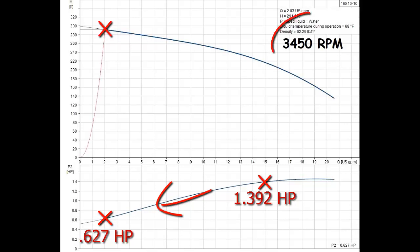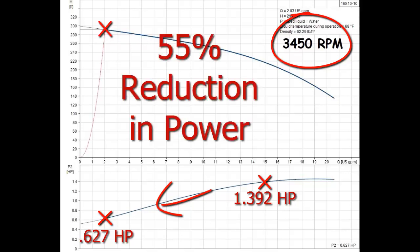That's right, the pump speed or RPM stays at the normal 3450 RPM while the energy consumption drops by 55% when simply restricting the flow with a valve.